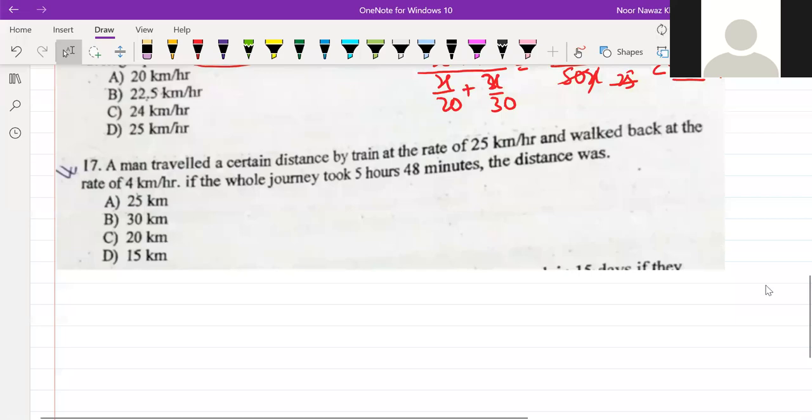We have a man travel a certain distance by train at the rate of 25 km per hour and walk back at the rate of 4 km per hour. If the whole journey took 5 hours 40 minutes, the distance was.